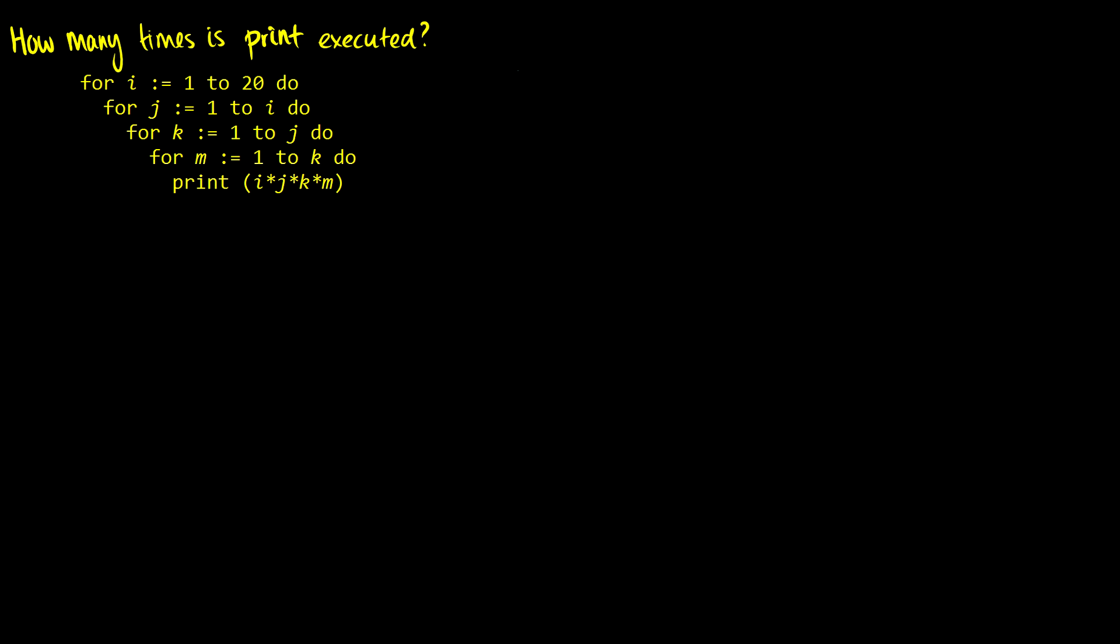Here's the more difficult question. I have some pseudocode here. I want to know how many times this print command is executed. Now this print is embedded in quite a bit of loops. So we have one, two, three, four - we have four for statements. So I have some loops here. Let's take a look at what these do. First, i goes from 1 to 20. j goes from 1 to i, so whatever i is, it'll loop until it gets to that i value. k goes from 1 to j, so that'll loop until it gets to the j value. And m goes from 1 to k, so it will loop until it gets to the k value.